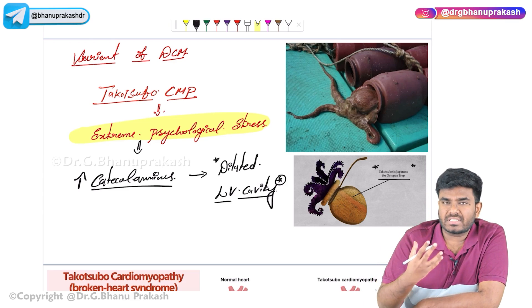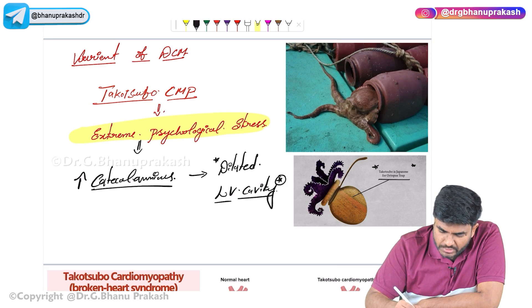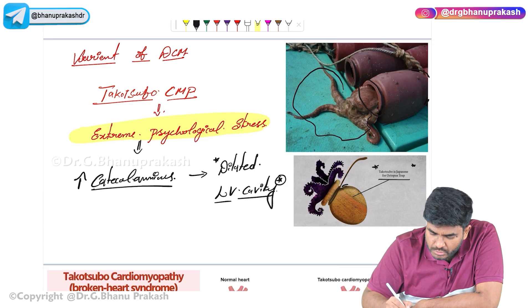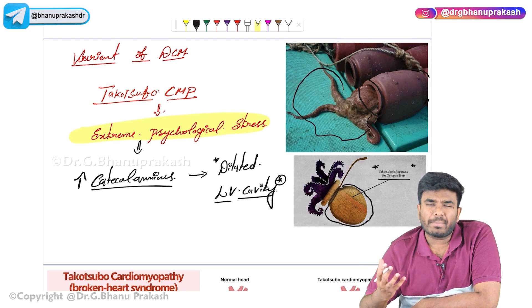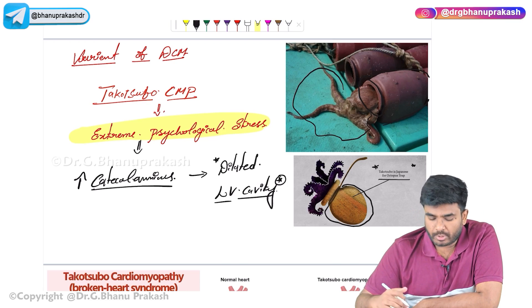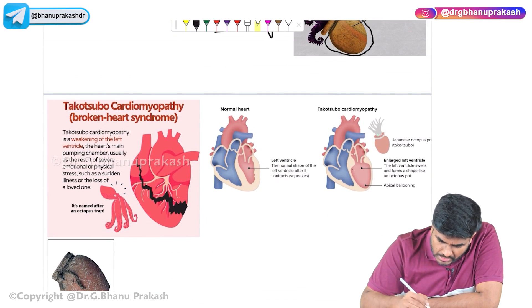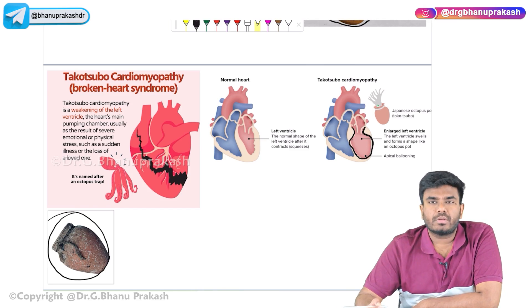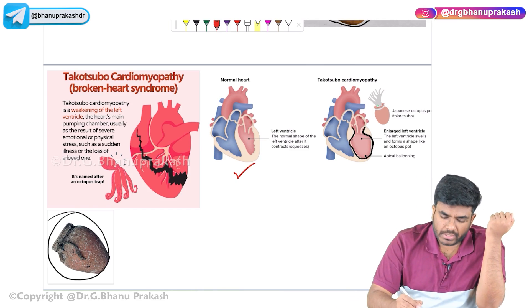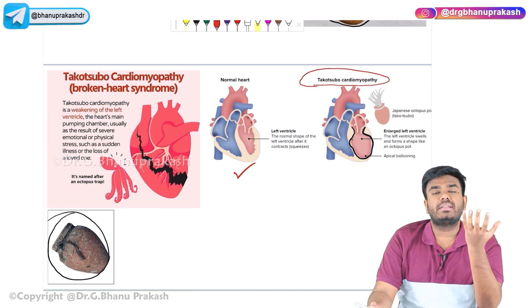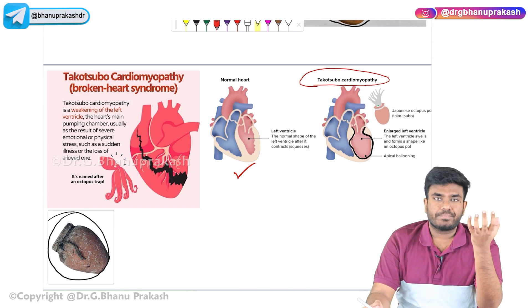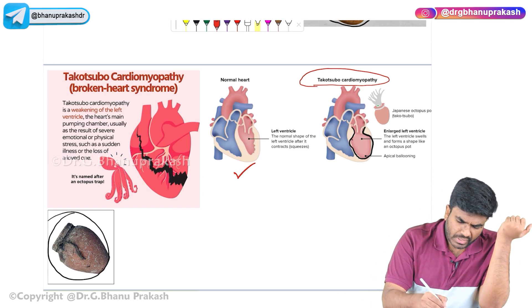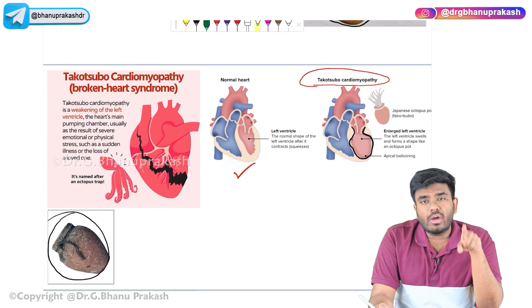This dilation of the left ventricular cavity looks like a tokosubo — a Japanese trap used to catch the octopus, shaped like a jar. Our heart in Takotsubo cardiomyopathy resembles this jar shape exactly. The dilated left ventricle appears and looks like a tokosubo, the Japanese octopus trap. Remember, Takotsubo cardiomyopathy is an example of dilated cardiomyopathy.